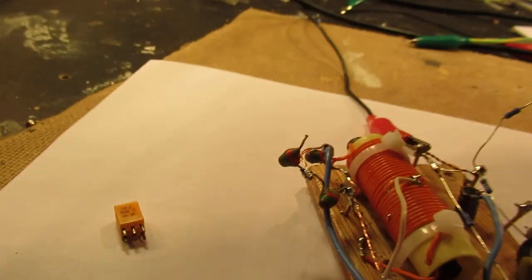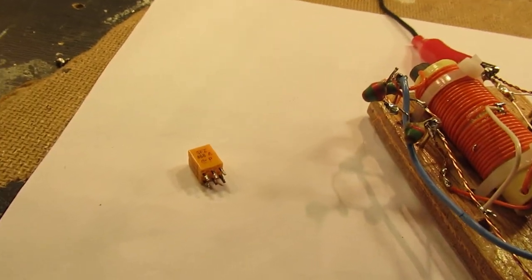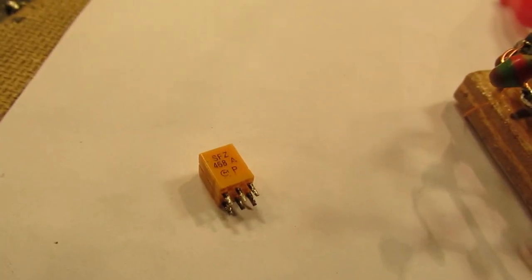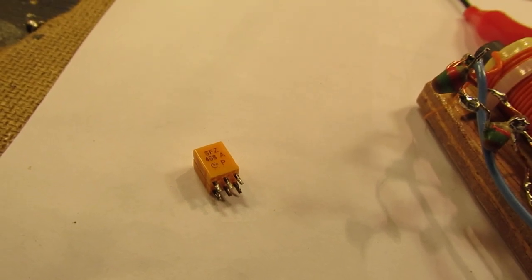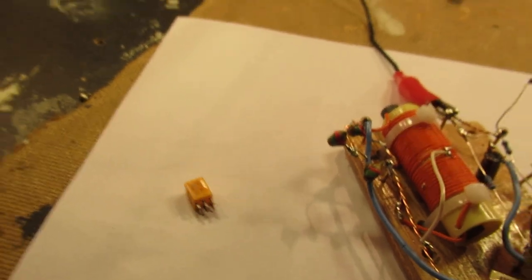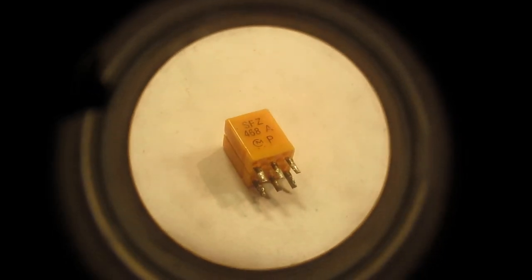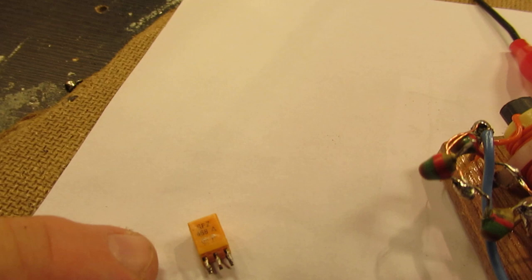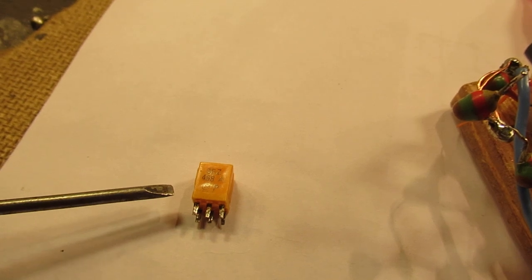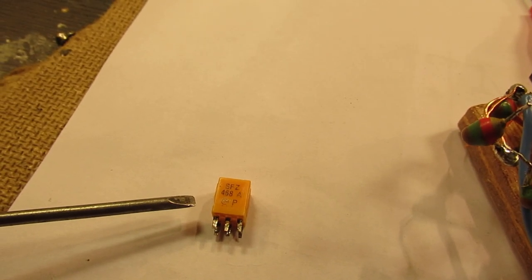I want to use this crystal. It is used as a kind of IF transformer, but of course a crystal IF transformer. On the body of that crystal we read 468A, and that means 468 kilohertz. That is the intermediate frequency I want to use with this crystal.